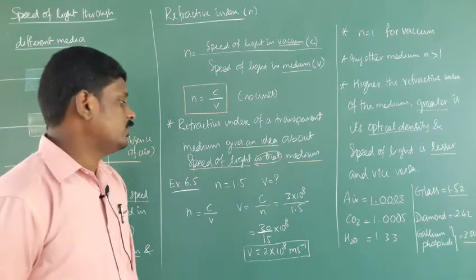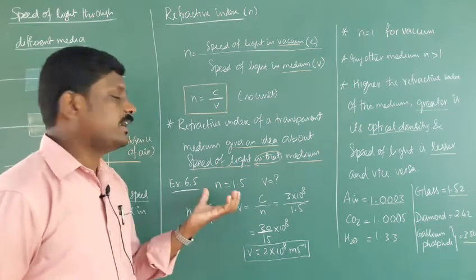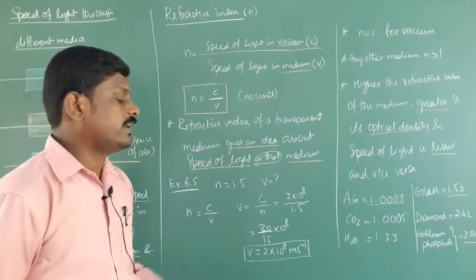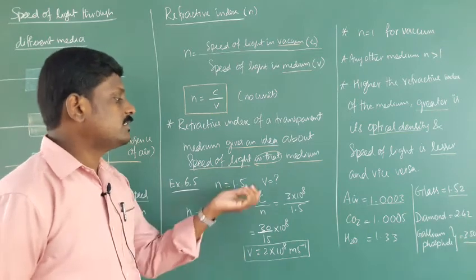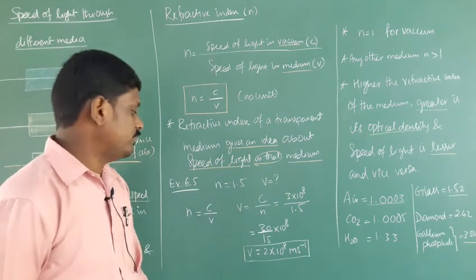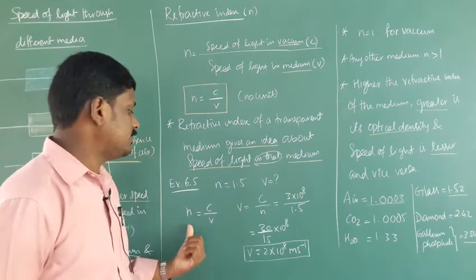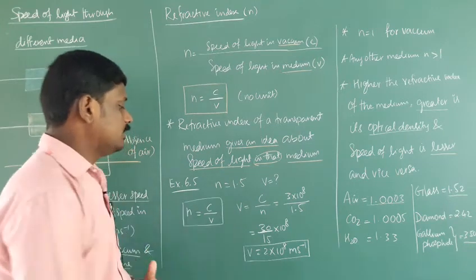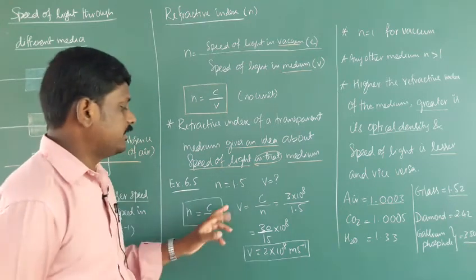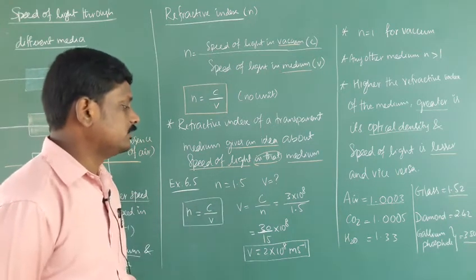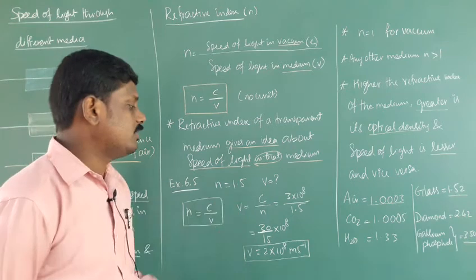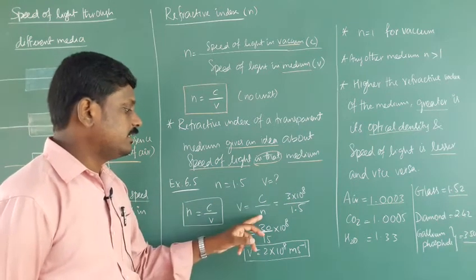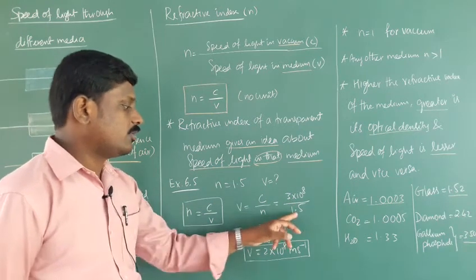Now let's see example 6.5. The refractive index of glass is 1.5 — what is the speed of light in that medium? We know the formula n = C/V. Rearranging, V = C/n. Substituting: C = 3×10⁸ m/s and the refractive index n = 1.5.